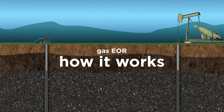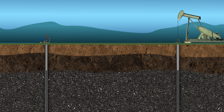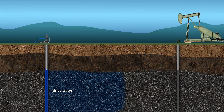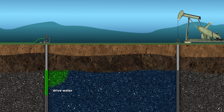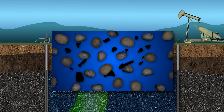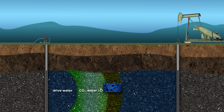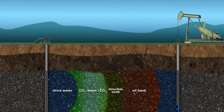Similar to how steam or water flood with polymer injection stimulates reservoir production, Chevron also uses gas EOR technology to help hydrocarbons flow more easily to the well. After first injecting water into the reservoir, our engineers pump carbon dioxide or hydrocarbon gas through the same injection wells. The gas mixes with the trapped oil, causing the oil to expand and dissolve from the reservoir rock, creating a miscible zone that allows the oil to move more easily to the well and be produced.